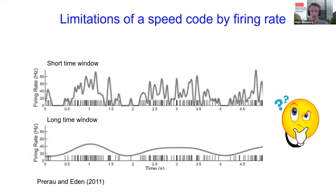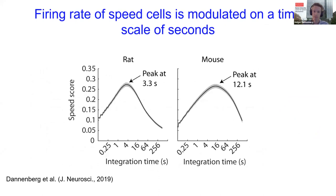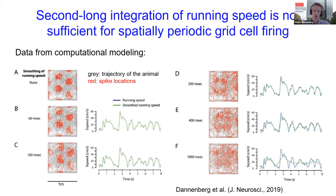This raises the question of which firing rate signal is most useful for the brain. To address that, we computed the firing rates of entorhinal speed cells using different integration time windows, ranging from as short as 125 milliseconds to as long as over a minute. We found that the integration time window that maximizes the speed score — the correlation between firing rate and running speed — was in the range of seconds: about 3 seconds in rats and 12 seconds in mice.